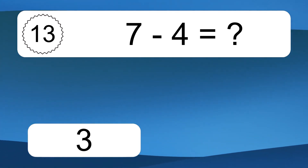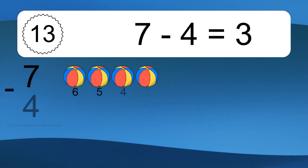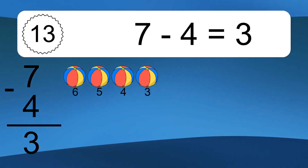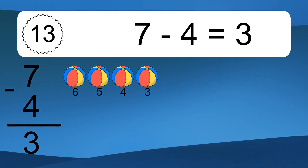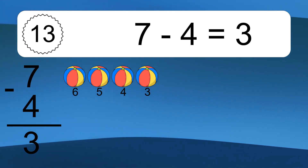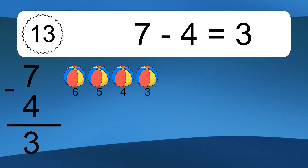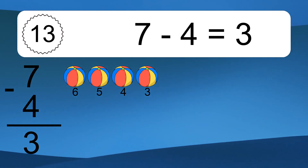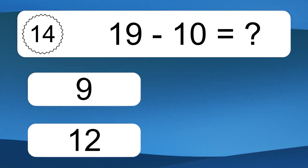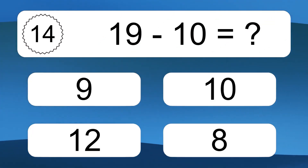Seven minus four equals three. Let's count it: six, five, four, three. Nineteen minus ten equals what?